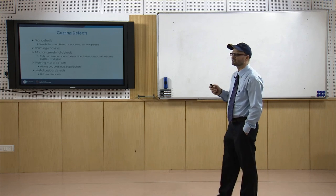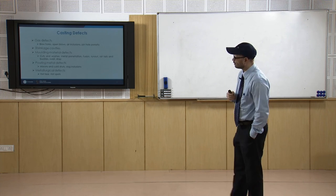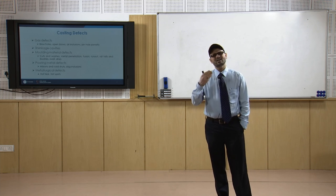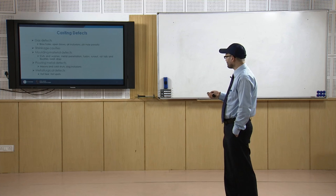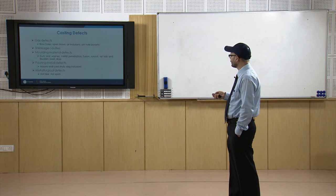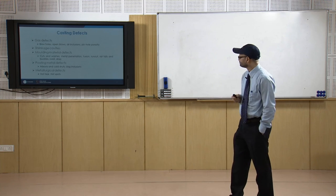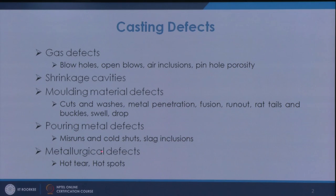You may also have shrinkage cavities, because during the solidification process shrinkage occurs and if adequate care is not taken, that may lead to their formation. There may be defects because of the moulding materials — cuts and washes, metal penetration, fusion, run out, rat tails and buckles, swell and drop. Then defects in the category of pouring metals: misrun, cold shut, and slag inclusions. And metallurgical defects like hot tears and hot spots.